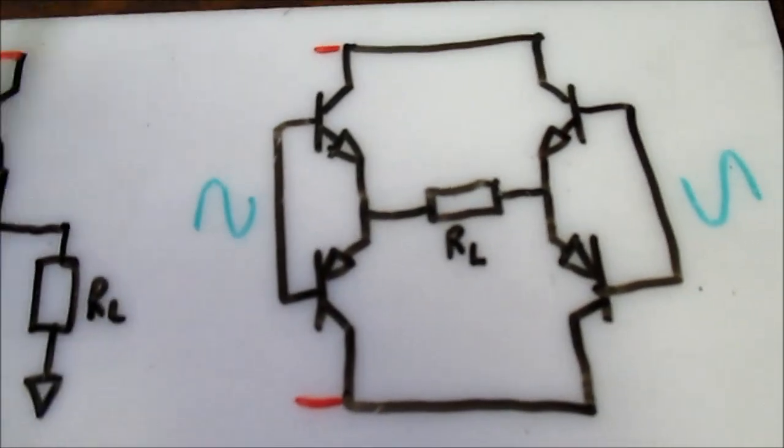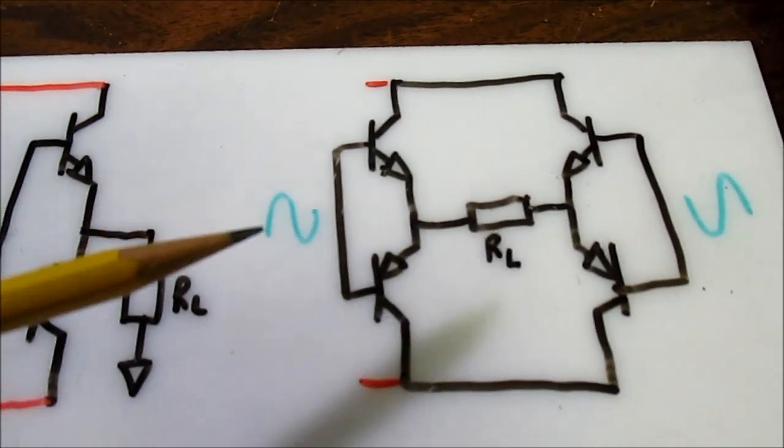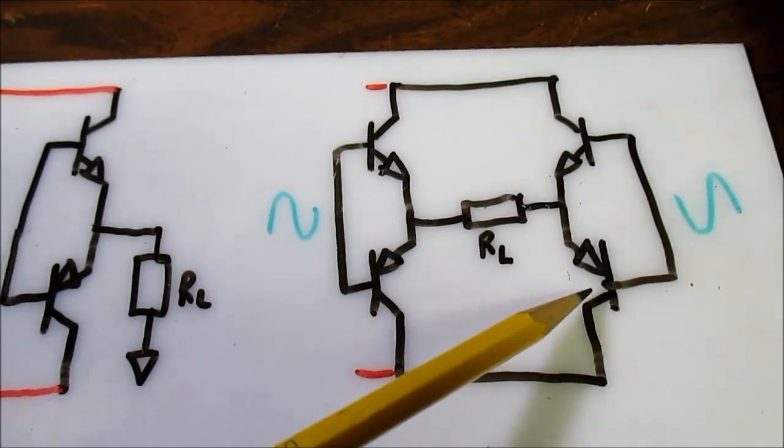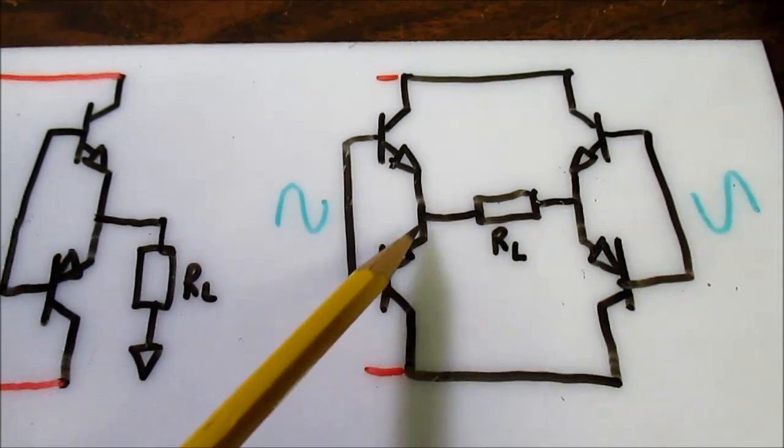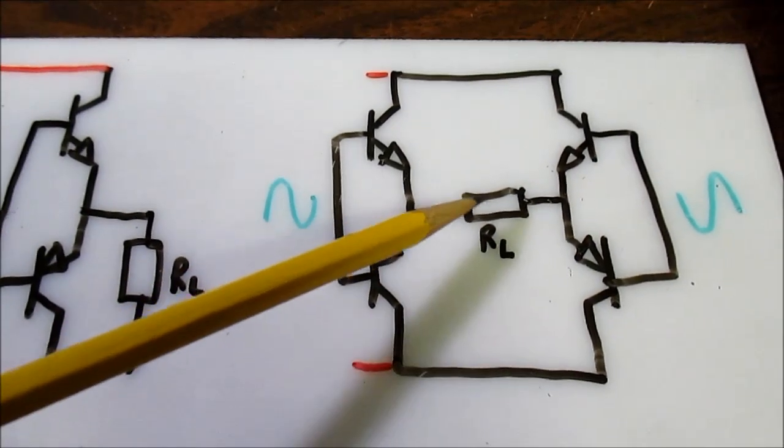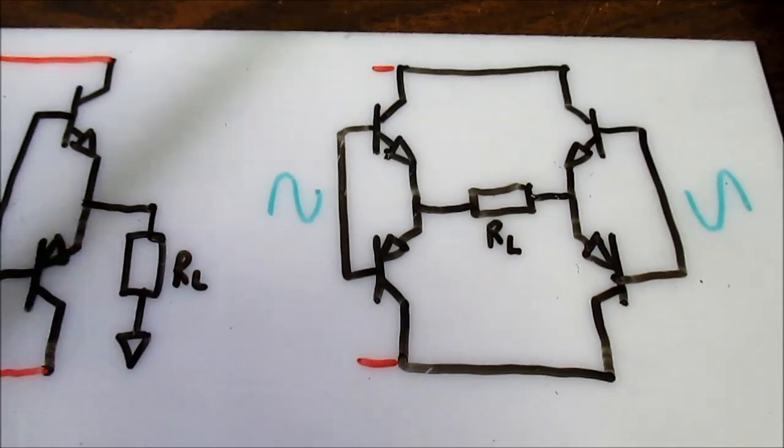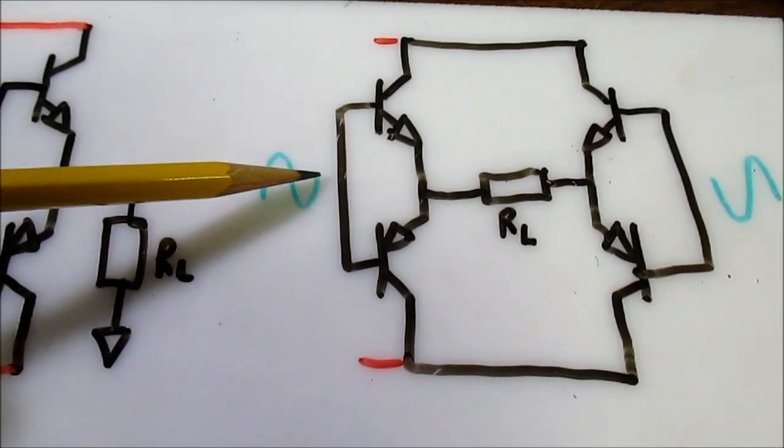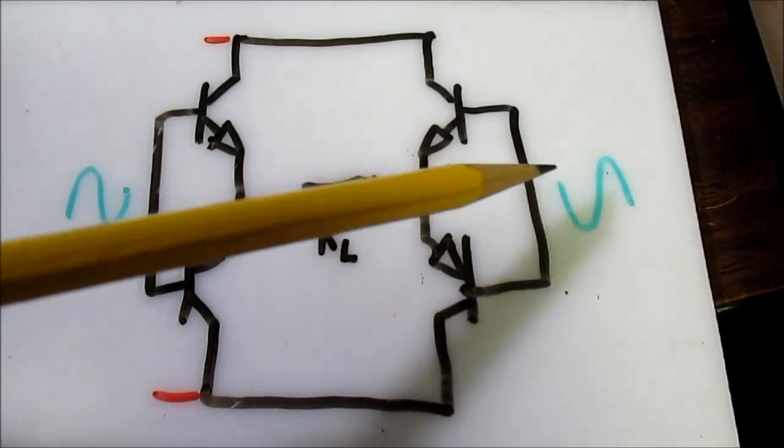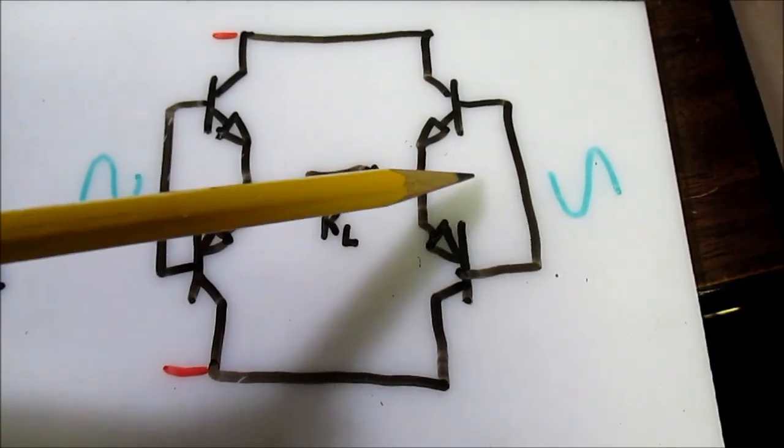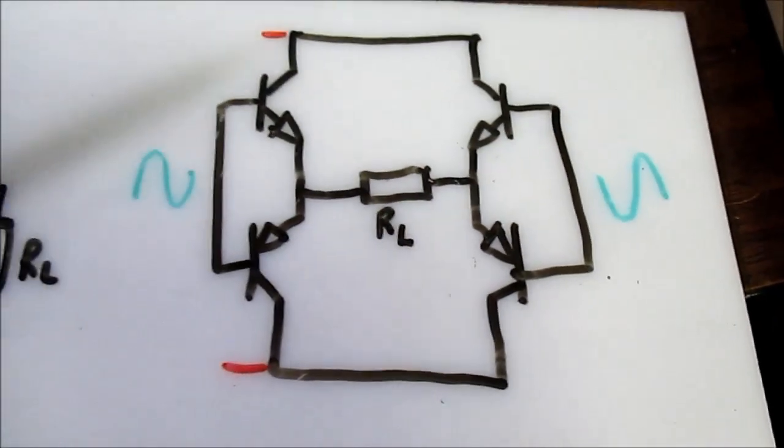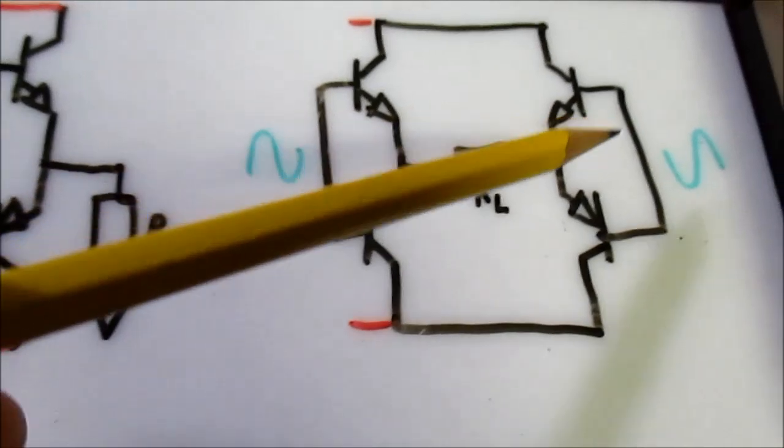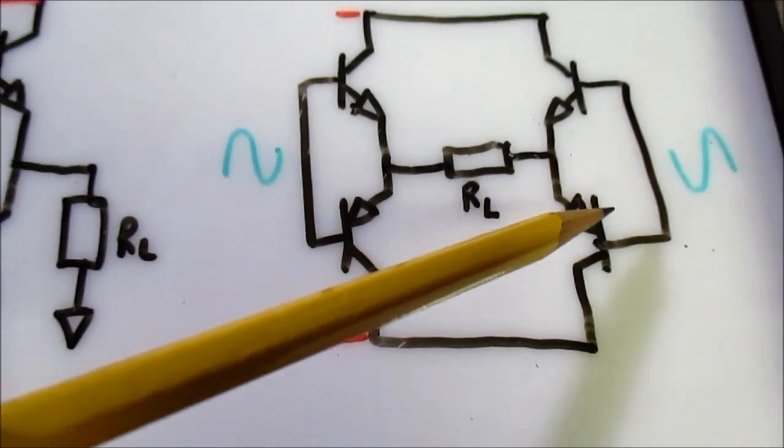Well, enter the bridge amplifier. What it is, is we take two push-pull stages, connect them in this fashion with the load between them. And that's where we get bridge from, because the load is not connected to ground. It's bridged across the outputs. On one amplifier, we input a standard non-inverted signal. And on the other side, or the other amplifier, we inverse the signal. So what's happening now, as one signal is increasing in amplitude, the other is decreasing by the same amount.